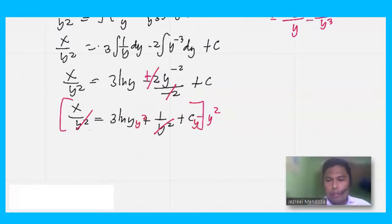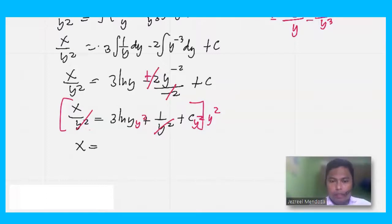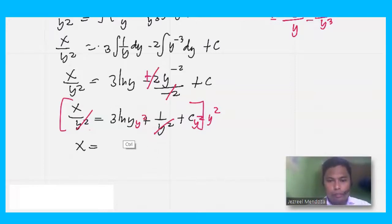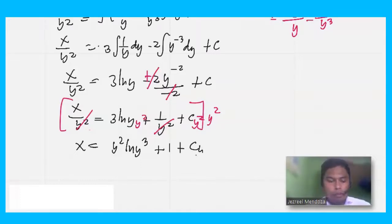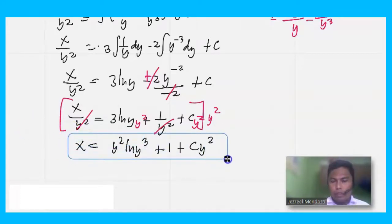So x over y squared equals 3 ln y plus 1 over y squared plus c. We notice that y squared is common in the denominators. Multiplying both sides by y squared cancels the y squared, giving us the final general solution: x equals 3y squared ln y plus 1 plus cy squared.